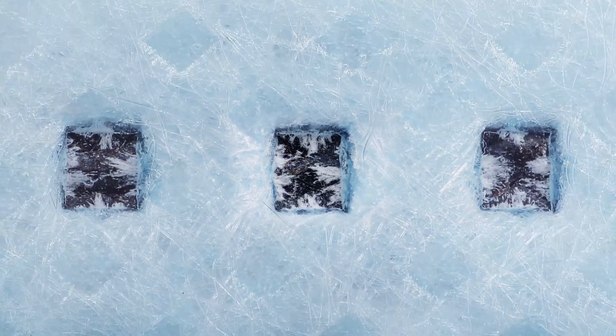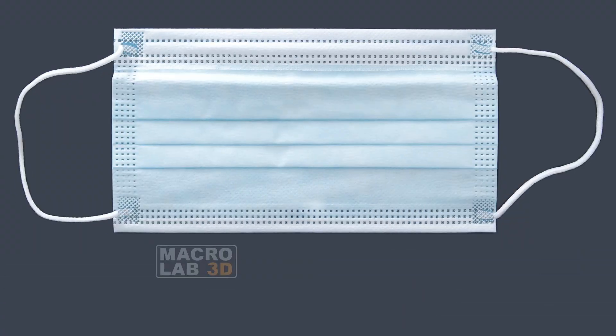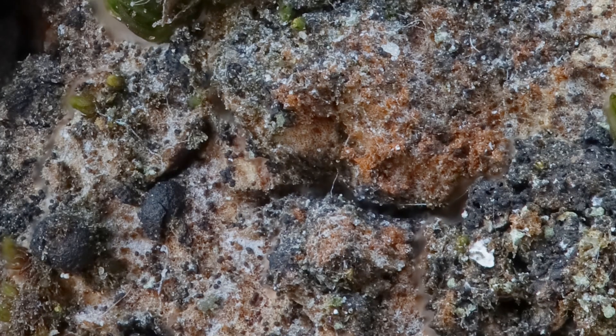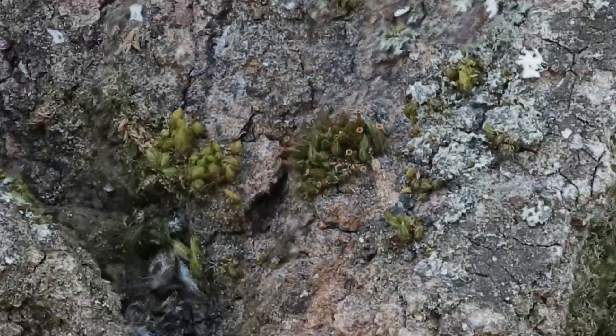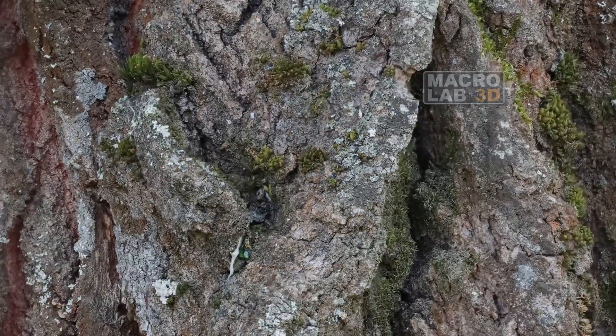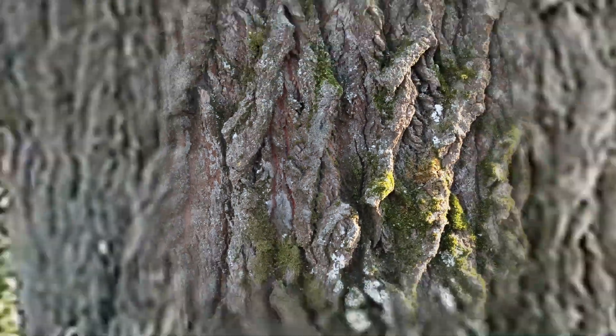This frozen lake ice fishing hole is actually a mask. This wild bonsai tree on a cliff is actually a moss on a poplar tree.